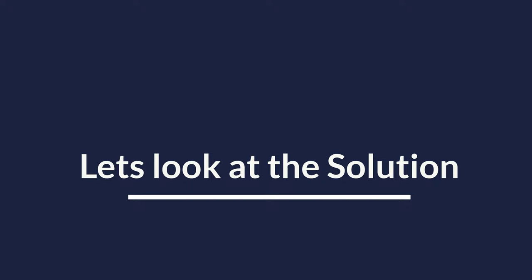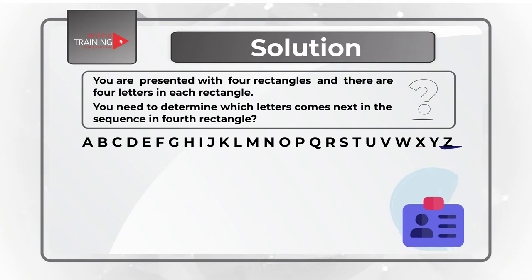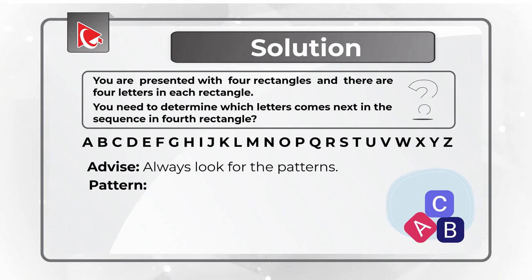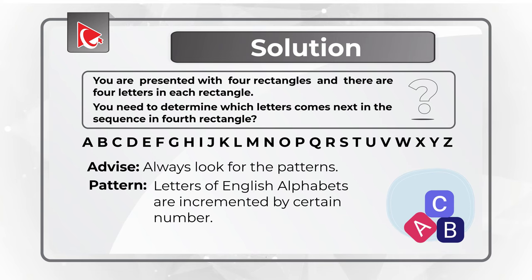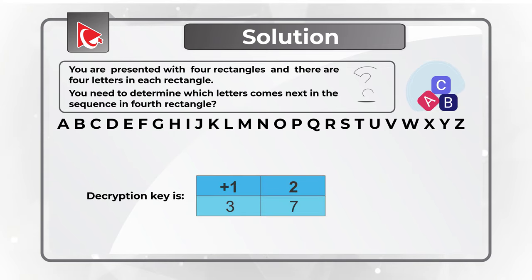To answer this question correctly, you need to know the letters of the English alphabet as well as some math. Always look for patterns. Letters of the English alphabet are incremented by a certain number, and the increment is different for each section of the rectangle. The decryption key is 1, 2, 3, and 7.